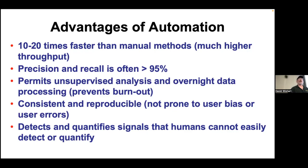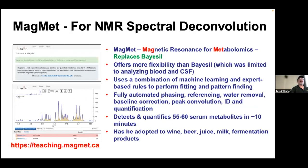Automation can often detect signals that humans don't easily detect. This led us to develop a software tool called MagMet—magnetic resonance for metabolomics—which automates spectral deconvolution. MagMet is new, faster, and gives greater flexibility than our previous program called Basel. It uses a combination of machine learning rules and expert rules for pattern fitting and deconvolution, with automatic phasing, chemical shift correction, water removal, baseline correction, and peak deconvolution. On average, it can identify about 55 to 60 serum metabolites in about 10 minutes, completely without any human intervention, so you can run it in parallel or overnight and process hundreds of samples.